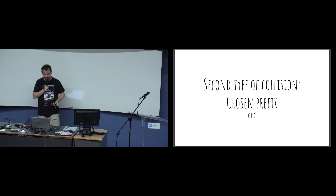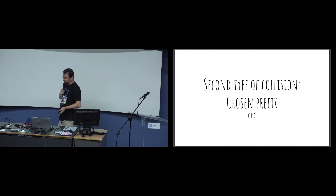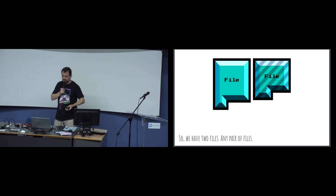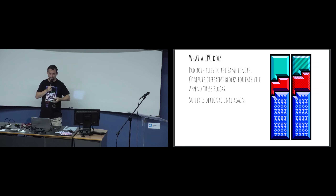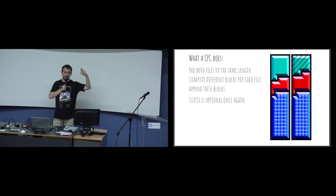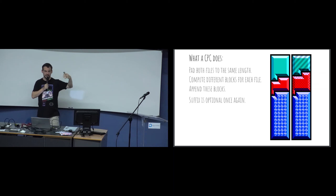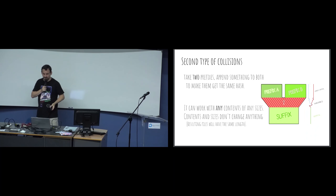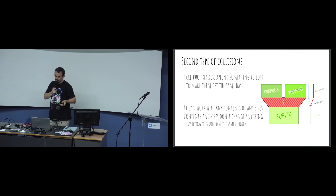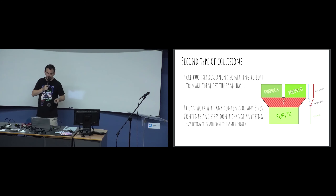The second type of collision is chosen prefix. You are given two prefixes - again the content and size don't matter. They are both padded to the same length at block size, then two blocks are computed and appended. The suffix is optional. The computation only depends on the input - it cannot be reused; you have to restart if even a single bit changes. This collision is better: it takes two totally different prefixes, appends something to both that gives the same hash, and works with any content and any size.